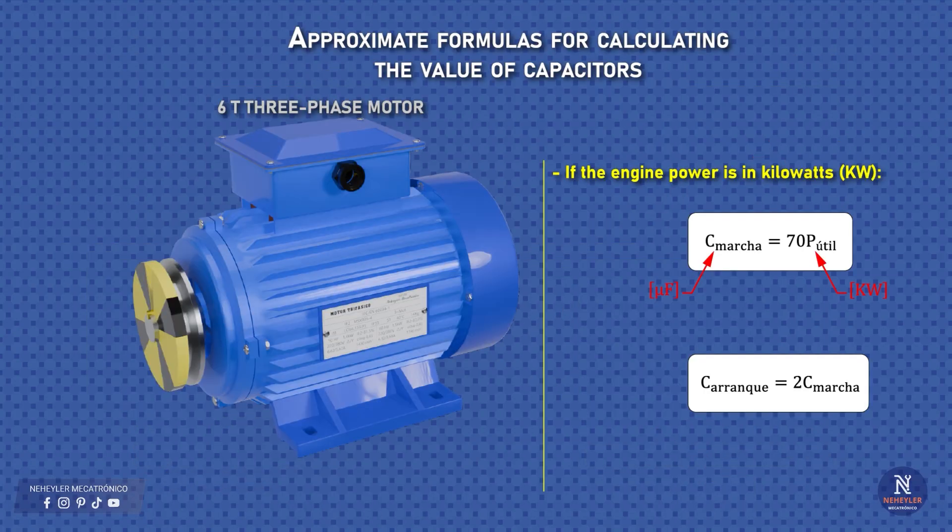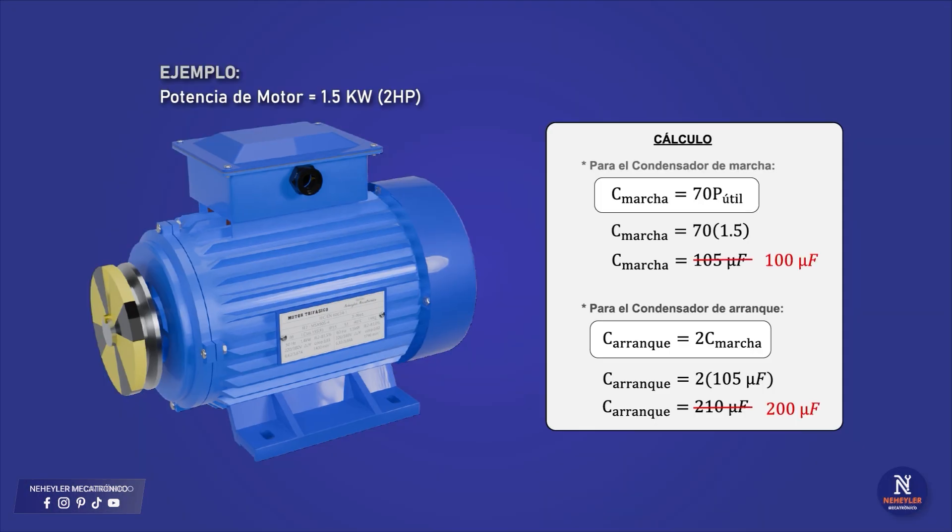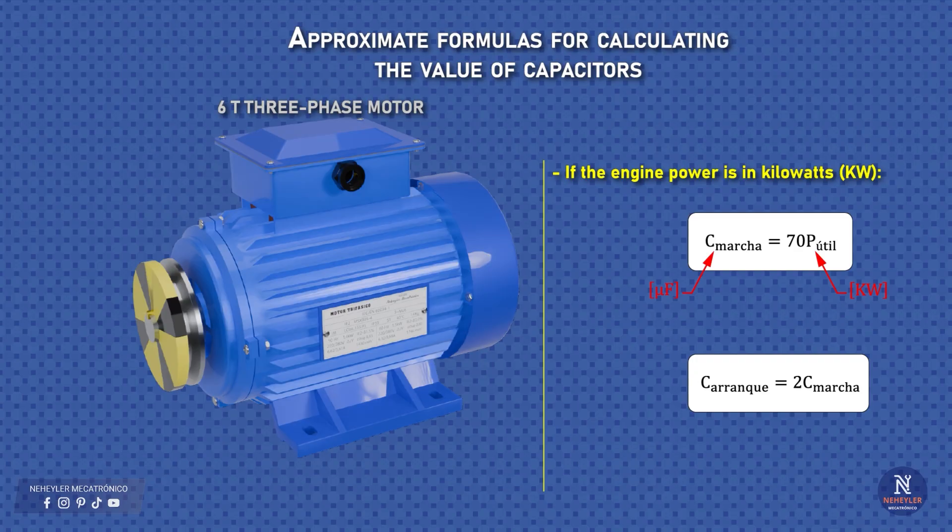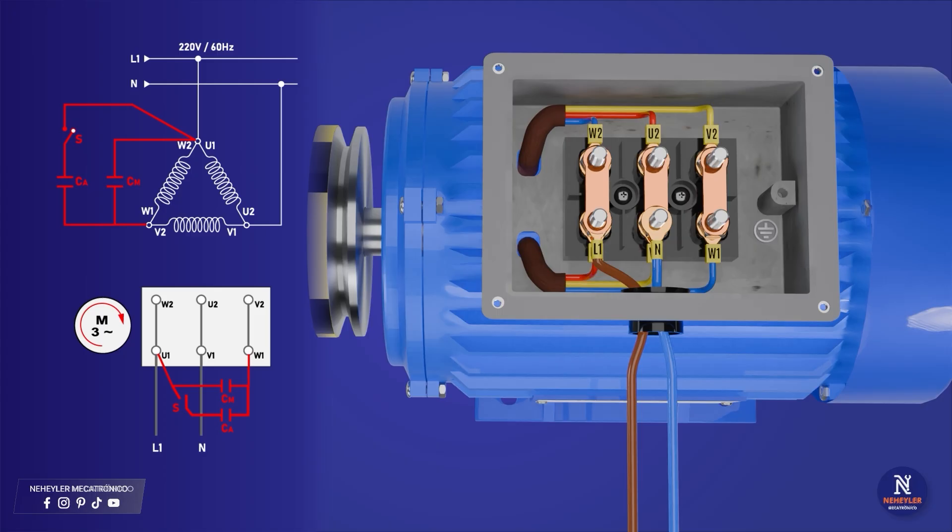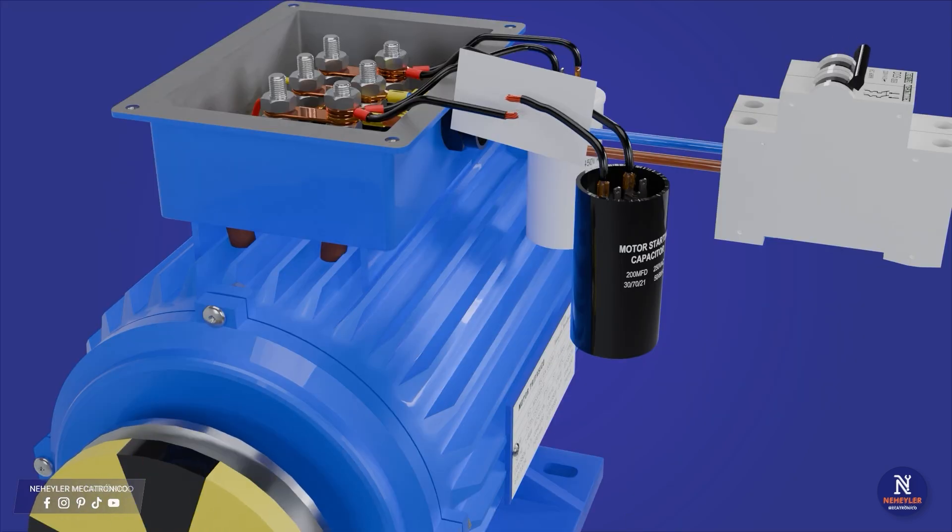The calculation of the capacitors can be done in a very practical way. For the run capacitor, an approximate value of 70 microfarads per kilowatt of motor power is used. And for the start capacitor, simply use double the run capacitor. This calculation was already explained in detail in the previous video, so here I only mention it as a quick review. The main topic of this video is the manual and automatic disconnection of the start capacitor in a three-phase motor powered with single phase.